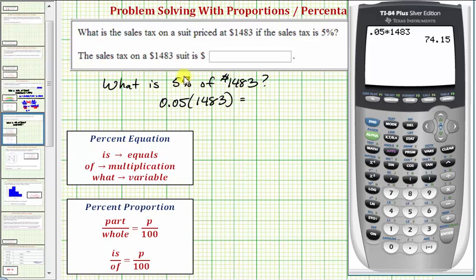And just for review, to convert a percent to a decimal we remove the percent sign and divide by 100. Notice five divided by 100 does give us the decimal 0.05. The other method is to remove the percent sign and move the decimal point to the left two places.